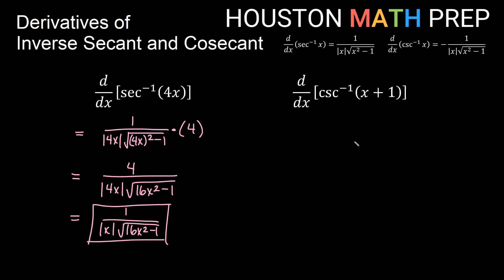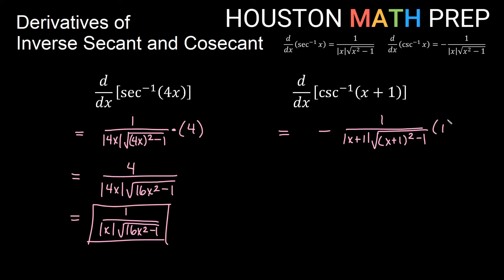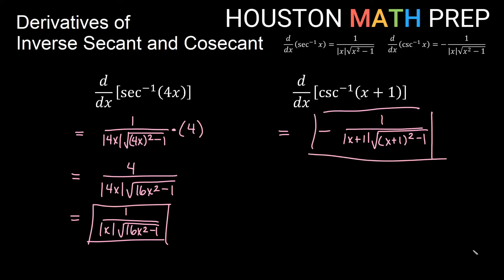For inverse cosecant of x plus 1, we use the negative formula. We get negative 1 over the absolute value of x plus 1 times the square root of the quantity x plus 1 squared minus 1. The chain rule derivative of x plus 1 is just 1, so it doesn't change anything, and that is our answer.